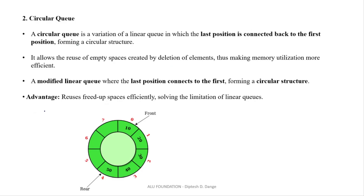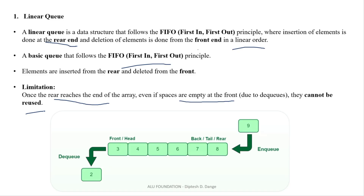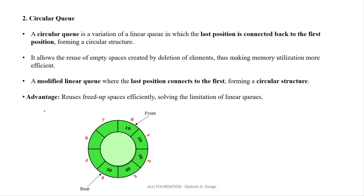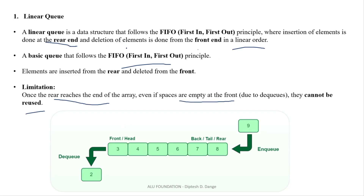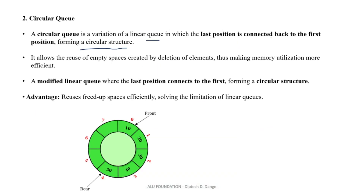Now let's see a circular Queue. जो problem आती थी linear Queue में space की, वो यहाँ पर remove होती है। A circular Queue is a variation of a linear Queue in which the last position is connected back to the first position, forming a circular structure. मतलब circular structure maintain करता है — जो first element है, is connected to the last element. यह हमारा first element 0 index पर और यह हमारा last element 7th index पर — तो 7 and 0 connect होते हैं एक दूसरे से। So this maintains a circular position।